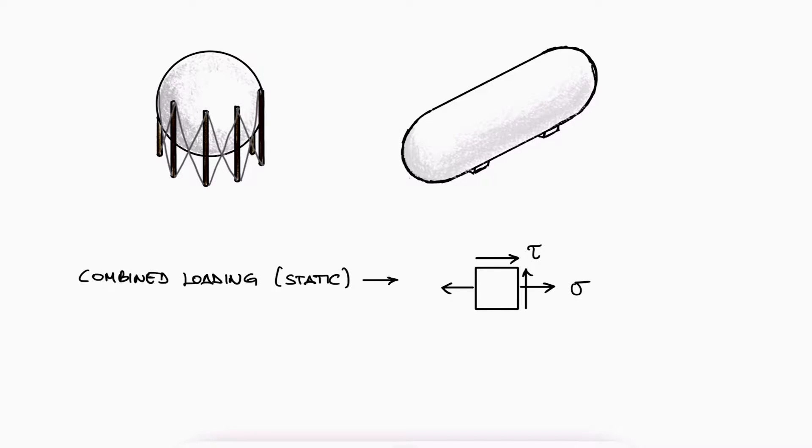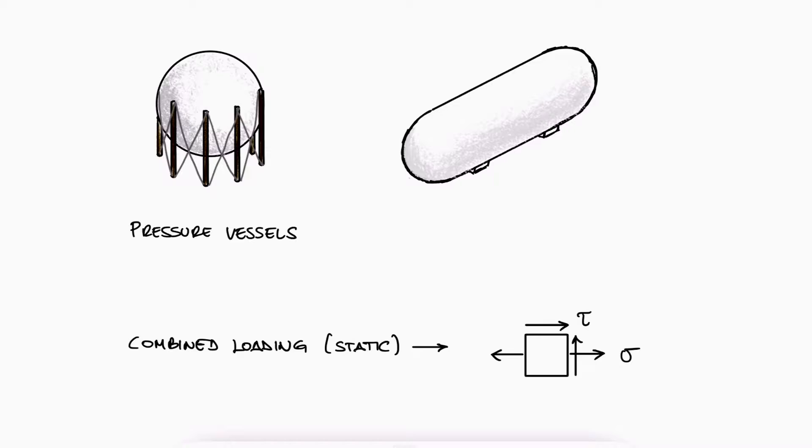link below to that combined loading main video and its examples. These pressure vessels are a good opportunity to show how there are indeed structures where two normal stresses, sigma x and sigma y, arise.